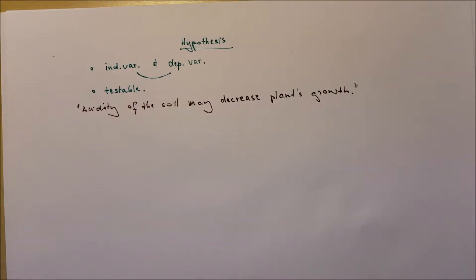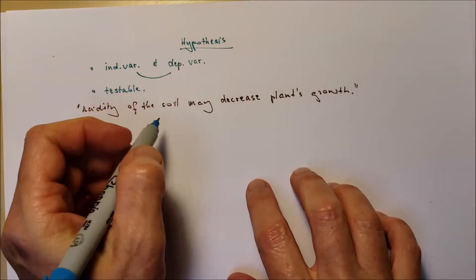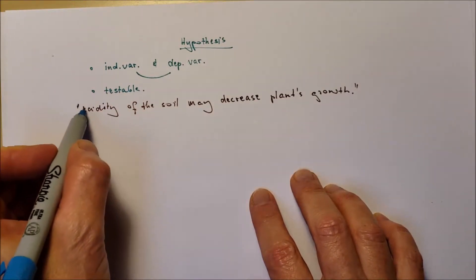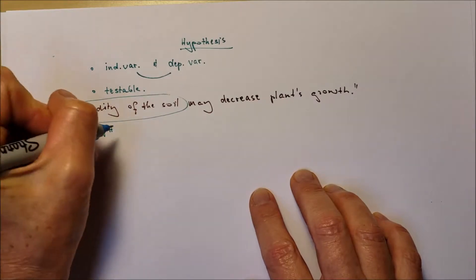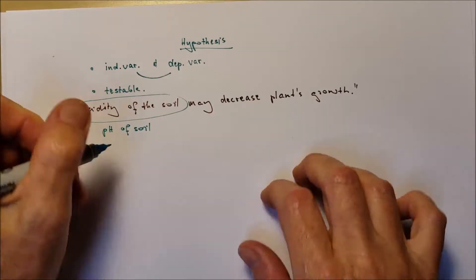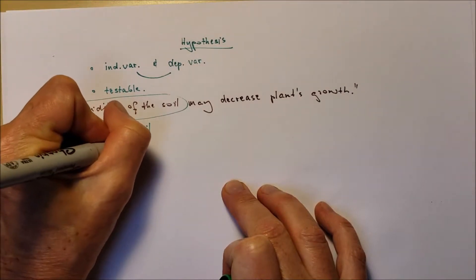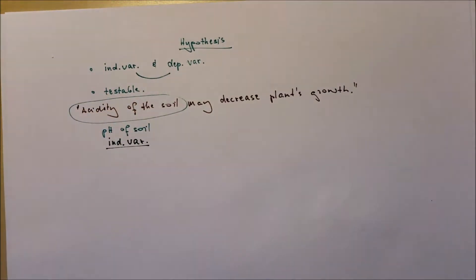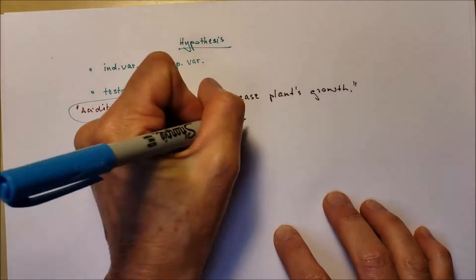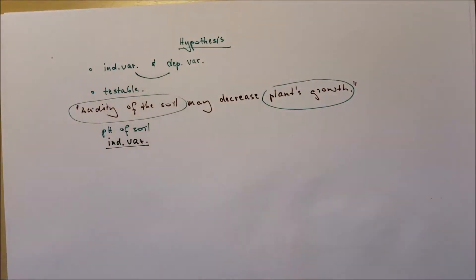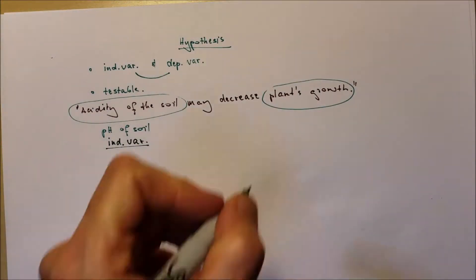So first we have to identify the independent variable, that's the pH of the soil, and we have to identify the dependent variable that is the plant's growth. This is the dependent variable.